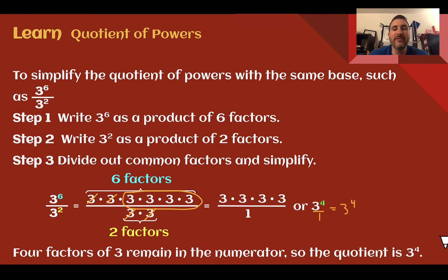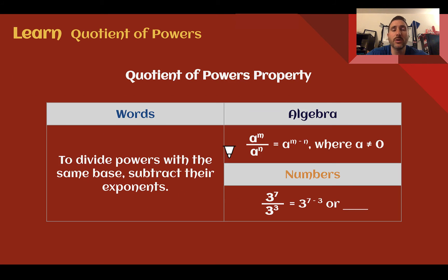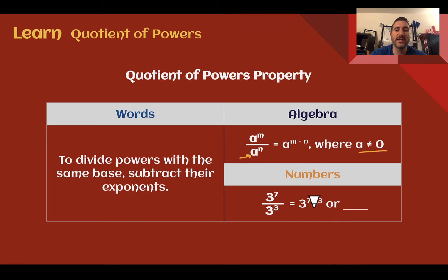So dividing gives us a quotient of 3 to the fourth. Notice that the difference of the exponents is the exponent of the final quotient — difference meaning subtraction. So when dividing with the same base, we can just subtract the exponents. This is called the quotient of powers property. Note that a cannot be zero because we can't divide by zero. So as long as A is not zero, 3 to the 7 divided by 3 to the third — subtract their exponents, 7 minus 3 is 4 — gives 3 to the fourth power.